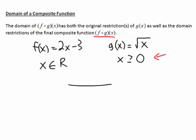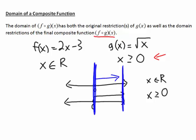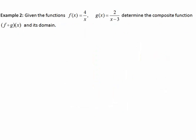Thinking about this on a number line: all real numbers covers the full line, while x greater than or equal to 0 covers only the right half. The new composite function must fit both domains, so the new composite function's domain would include x greater than or equal to 0.